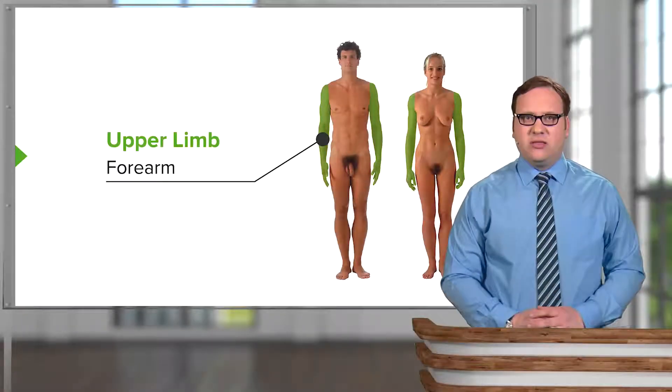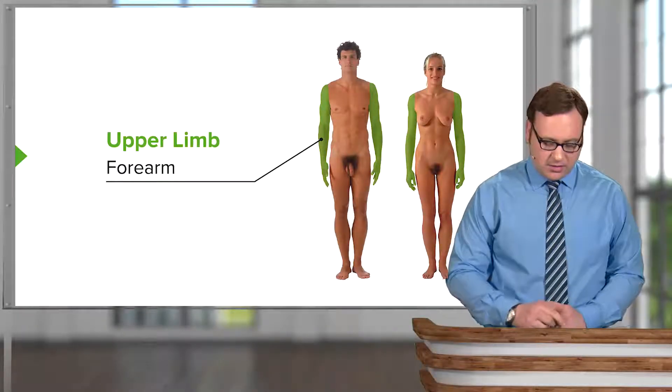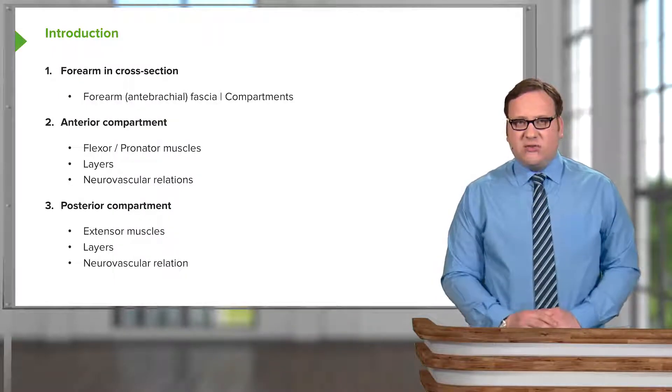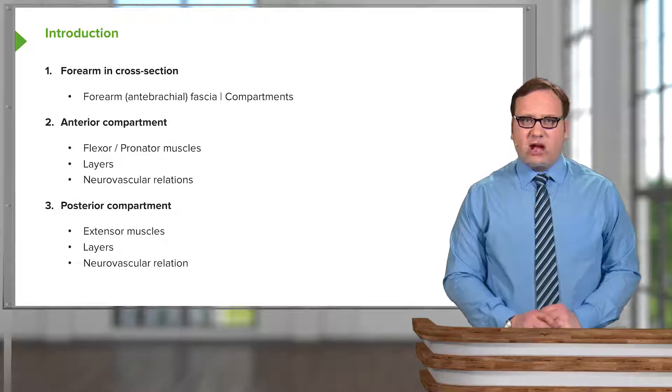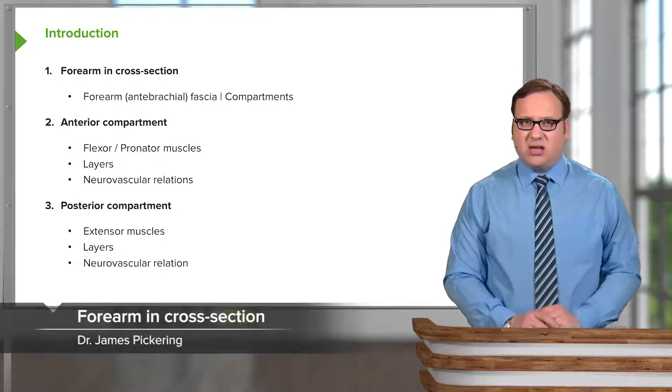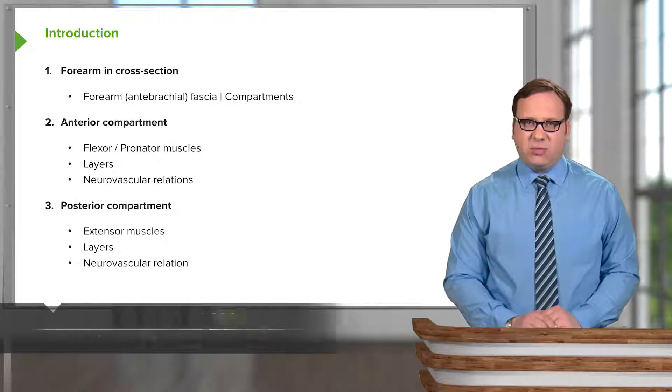In this lecture, we're going to look at the forearm. We'll start off by looking at the forearm in cross-section. We'll look at the forearm fascia, or the anti-brachial fascia, and the various compartments that are formed.